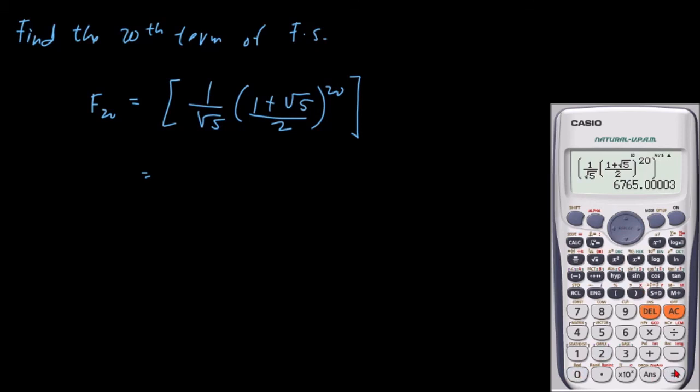And we will end up with 6,765. So 6,765. And this is our 20th term of the Fibonacci sequence.